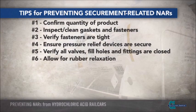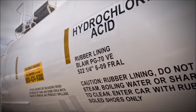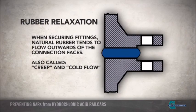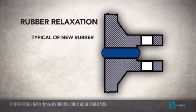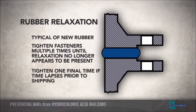All hydrochloric acid tank cars are lined with a rubber lining to protect the steel tank. On most cars, this rubber lining extends to cover the surface of the fittings that will be exposed to the acid. When securing the fittings, natural rubber tends to flow outwards of the connection faces, also known as creep or cold flow. If time is not allowed for the rubber to relax to its final position, it can create the illusion that the fittings are secured tighter than they actually are. This behavior is more typical with newer rubber. To ensure fittings are properly secured, the recommendation is to tighten their fasteners multiple times until relaxation of the rubber no longer appears to be present. If time lapses before shipment, a final check should be made to ensure all valves and fittings are still fastened tightly.